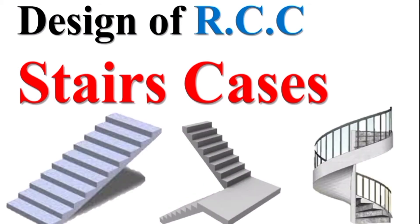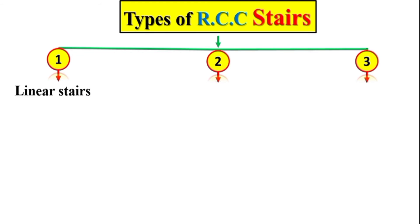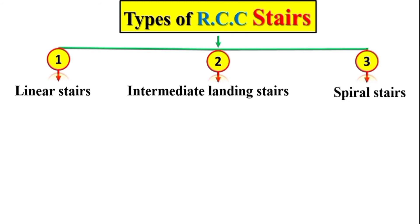There are three types of RCC stairs, each with various uses and structural applications. These stairs are known as: the linear stair, which is the first and most common type; the intermediate landing stair; and the spiral stair.